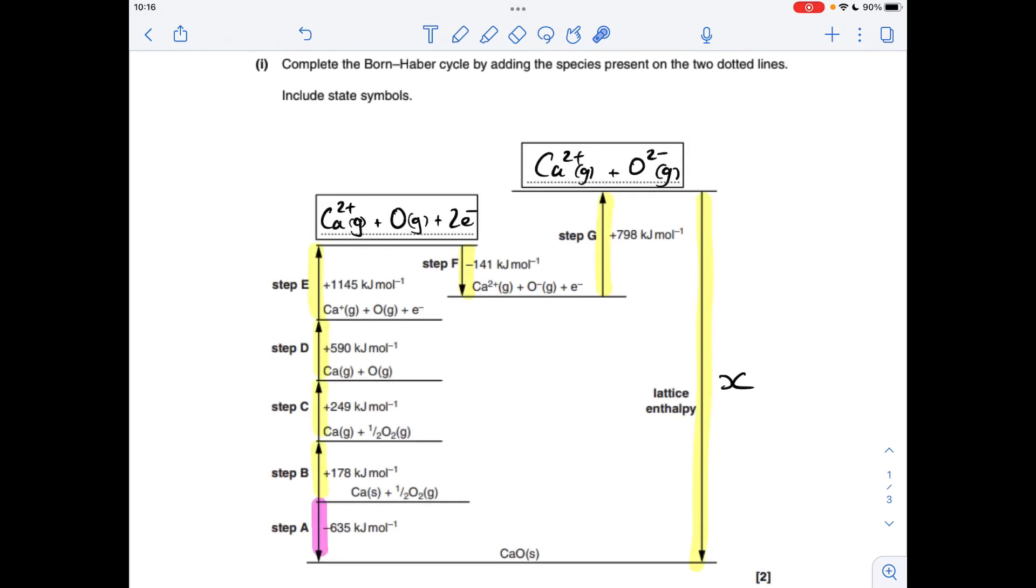Back to the cycle for the calculation, just to explain how you do it. And then I'll do the number crunching on the actual question. So you can see I've colour coded the two routes. So starting from elements, you can go to the compound via step A alone. So that has an enthalpy change of minus 635. The other way you can go from there to there is round all these yellow steps.